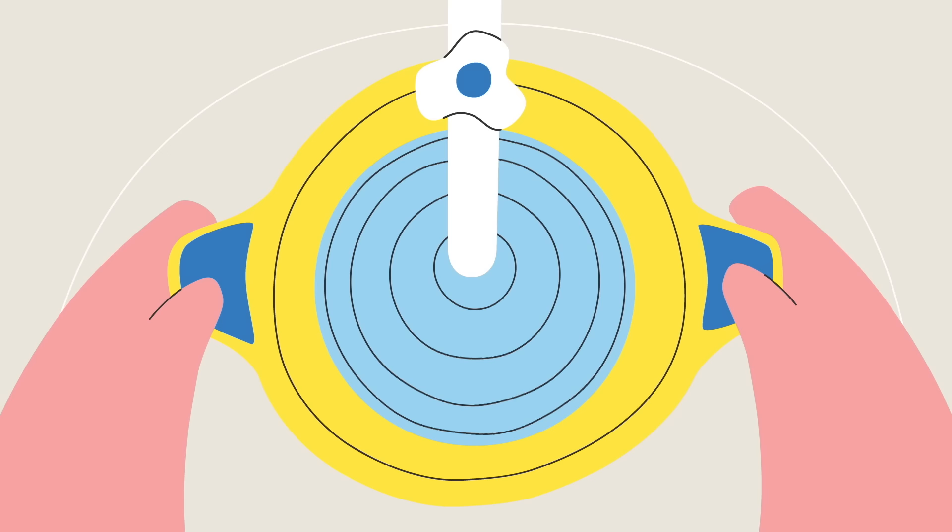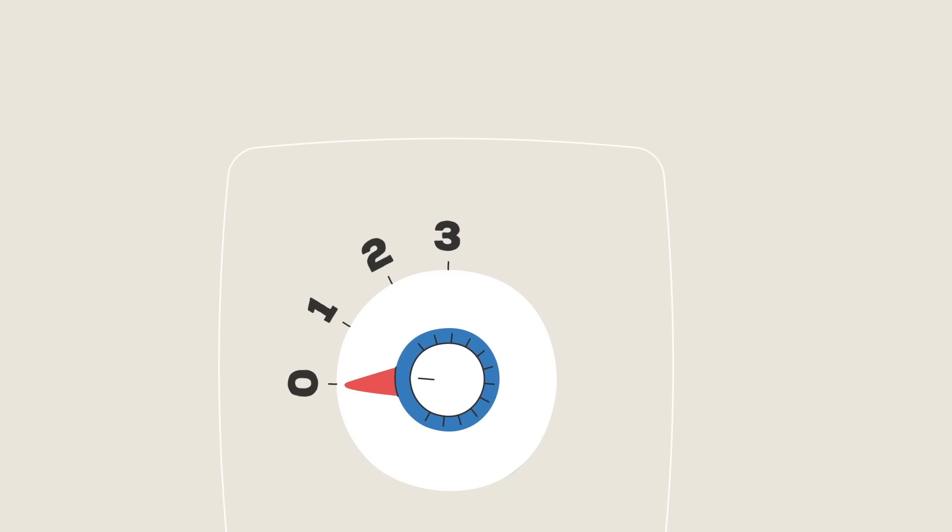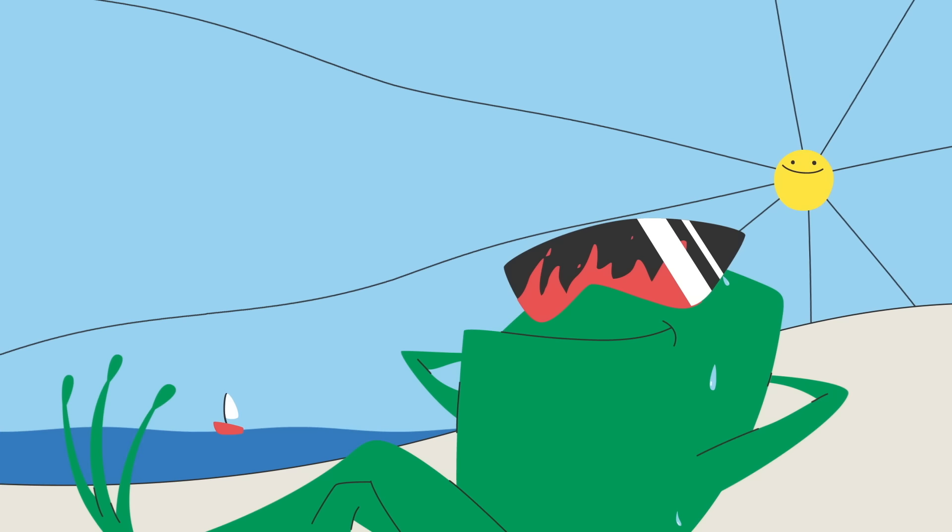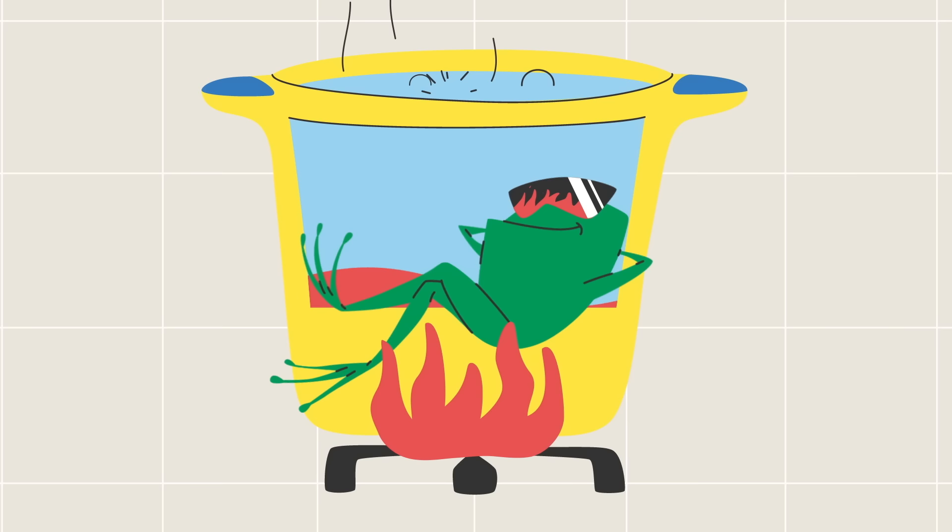The chef refills the pot, but this time he doesn't turn on the heat. He plops the second frog in, and this frog's okay with that. The chef turns the heat on very low, and the temperature of the water slowly rises. So slowly that the frog doesn't notice.